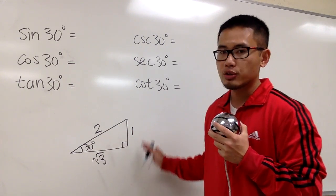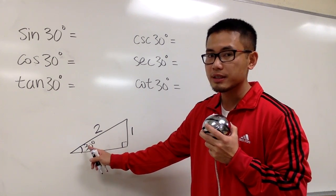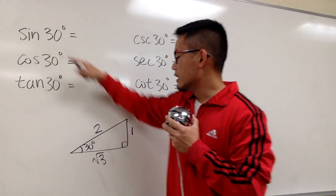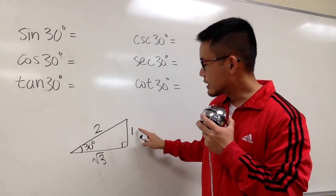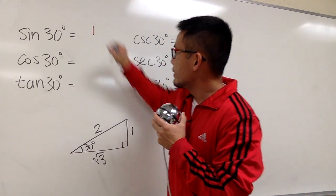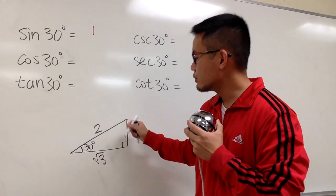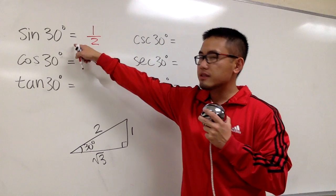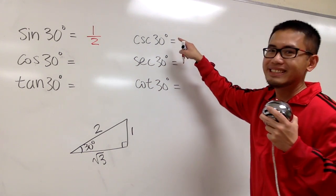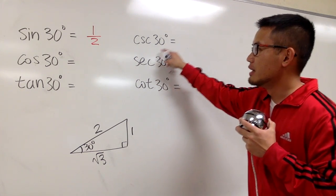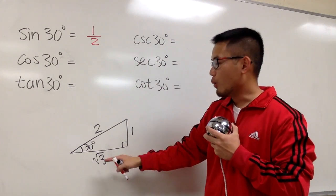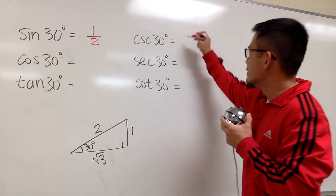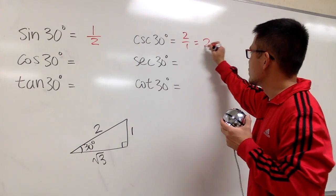Once you have this picture, the angle is here at 30 degrees, you can just go ahead and do the usual business. Sine of 30 degrees is the opposite, which in this case is 1, over the hypotenuse, which is 2. So we have 1 over 2. And once you have sine of 30 degrees, you should know the cosecant of 30 degrees, because that is just the reciprocal — the hypotenuse over the opposite — so 2 over 1, which is just 2.